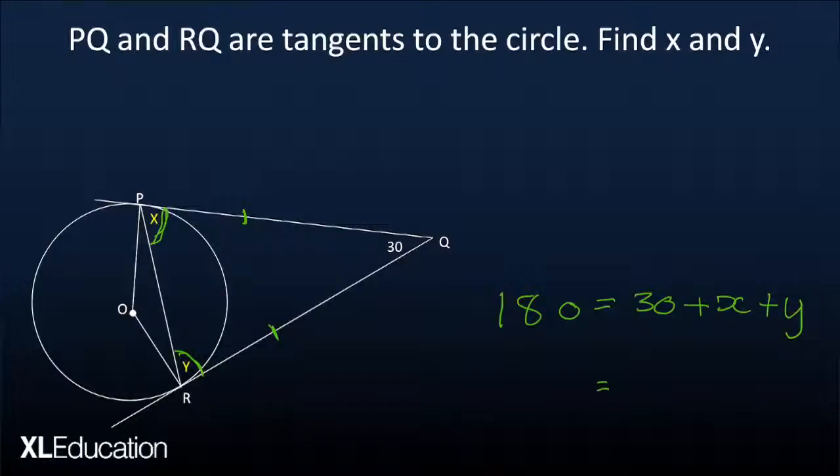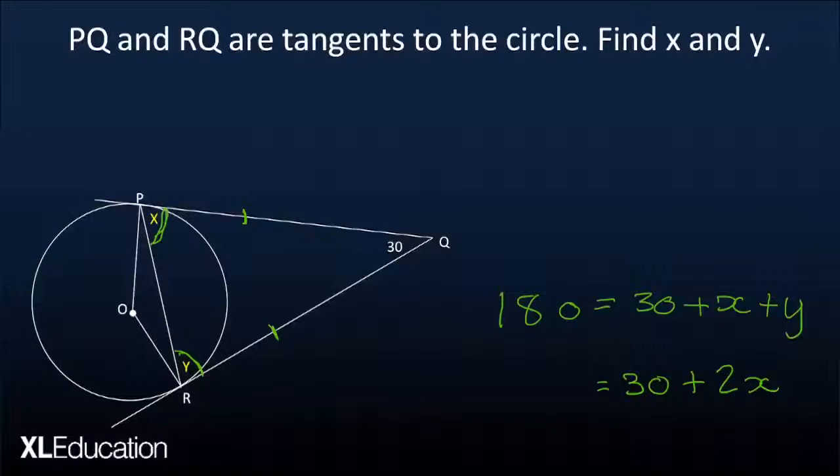So I have 180 degrees is equal to 30 plus x plus y. But as we said, x and y are the same. We've already seen that x and y is the same angle. So we can then rewrite that as 180 equals 30 plus 2x. Then I can easily solve for x and find that 150 equals 2x. So x equals 75.